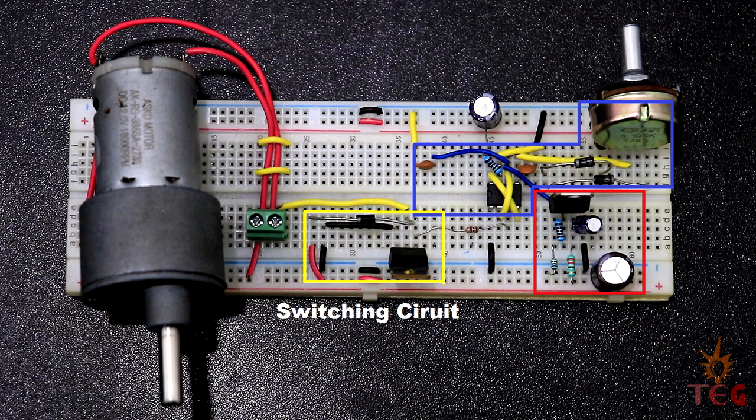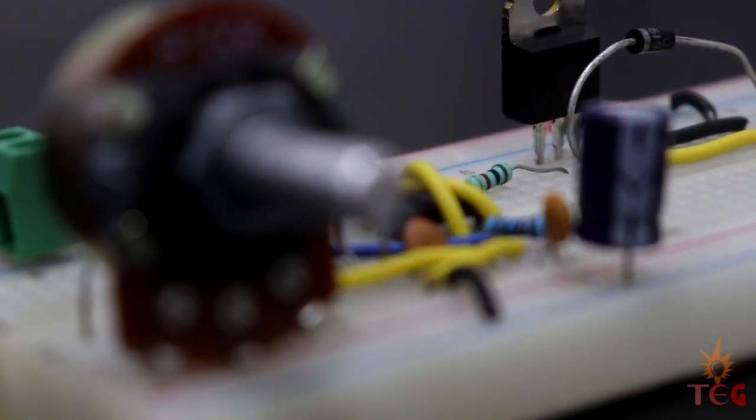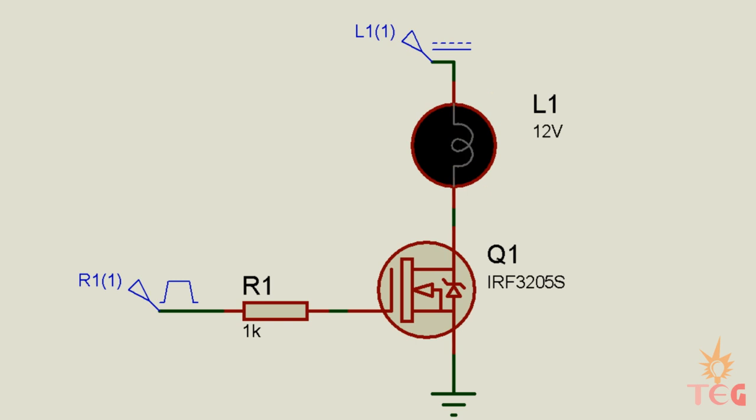For the sake of better understanding, I'm going through the switching circuit first. Switching circuit, as the name itself suggests, is used to switch the output on and off but at a very high frequency. Here a MOSFET is used to do the job.